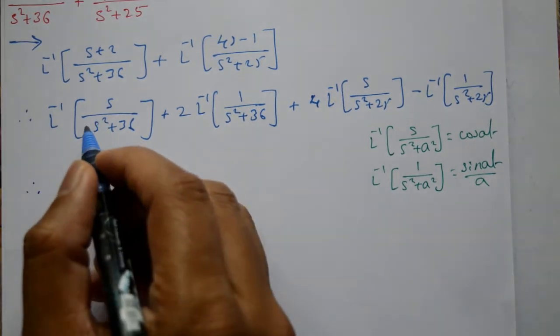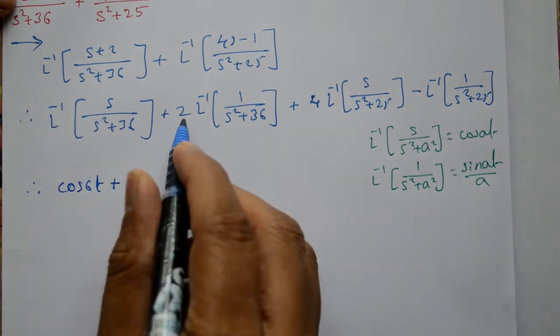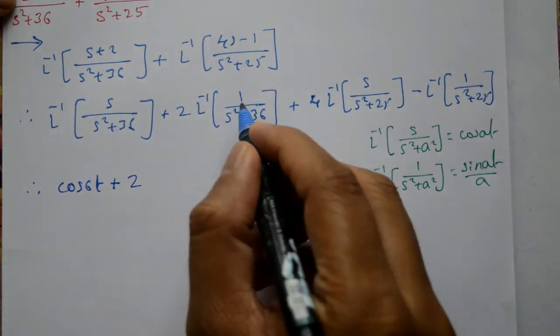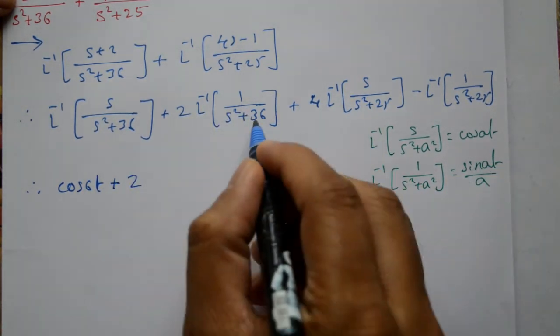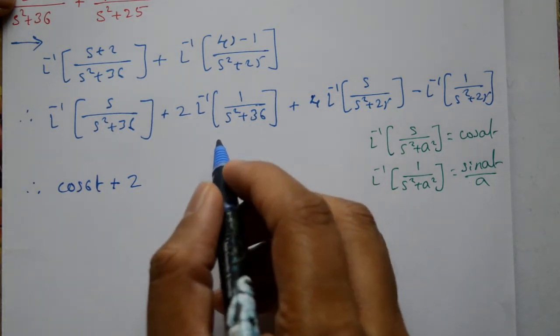Therefore this term becomes cos 6t, plus 2 times the second formula: sin at by a. Since a is 6, this is 2 by 6 times sin 6t.